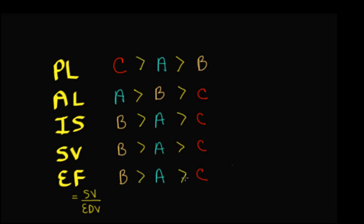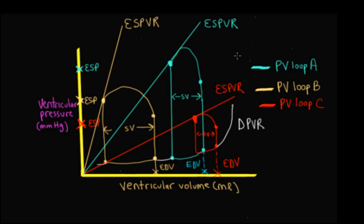So for different PV loops, we can compare many things: preload by looking at end diastolic volume, afterload by looking at end systolic pressures, inotropic state by drawing and comparing the ESPVR slopes, stroke volume as the difference between EDV and ESV, and ejection fraction as the ratio of stroke volume to end diastolic volume. That concludes this video on comparison of different PV loops.